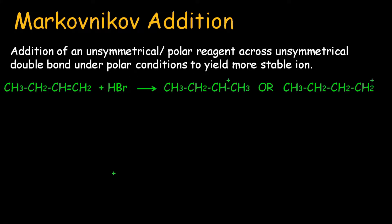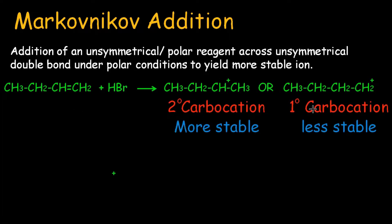Consider the addition of HBr into an unsymmetrical alkene. The reaction proceeds via a stepwise mechanism, and whenever a stepwise mechanism proceeds, there must be a transition state — in this reaction, the transition state is a carbocation. When HBr, a polar or unsymmetrical reagent, adds into an unsymmetrical alkene, it can yield a secondary carbocation or a primary carbocation. Since secondary carbocation is more stable, Markovnikov addition favors the secondary carbocation.